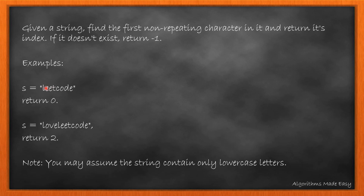Given the string 'leet code', we can see that 'l' is the first unique character and is at index 0, so the result becomes 0. If the string is 'love leet code', we can see 'l' and 'o' are repeated, while 'v' is the first unique character at index 2, so we return 2. It is also mentioned that the string will only contain lowercase letters.